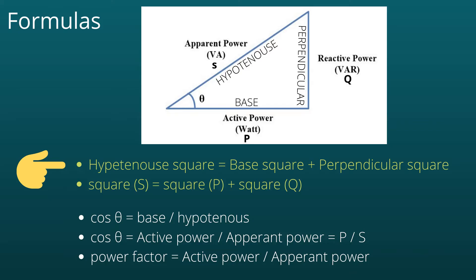From the Pythagoras theorem, we know that hypotenuse squared equals base squared plus perpendicular squared. So apparent power squared is equal to active power squared plus reactive power squared. That gives us S² = P² + Q², where P and Q are active power and reactive power respectively.